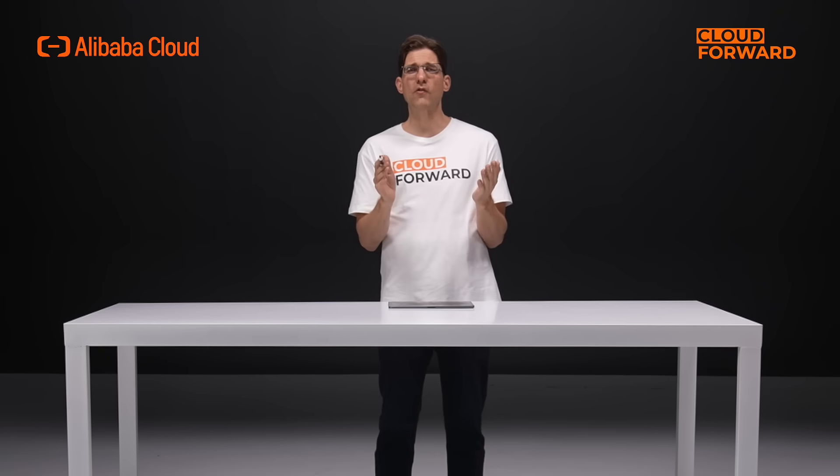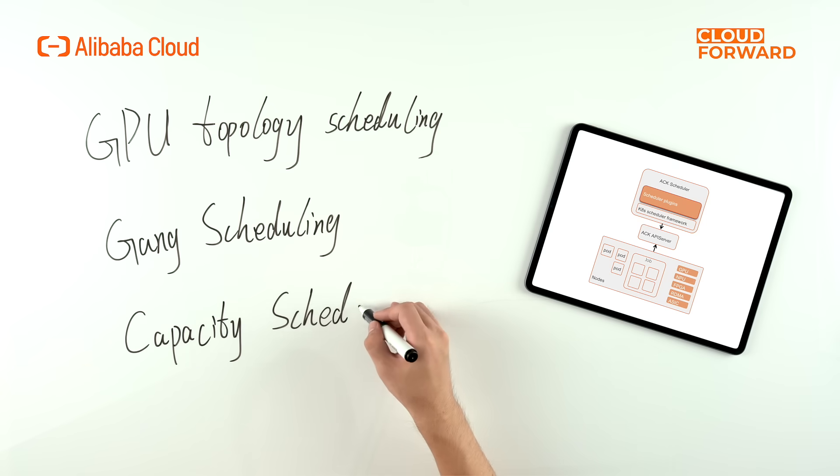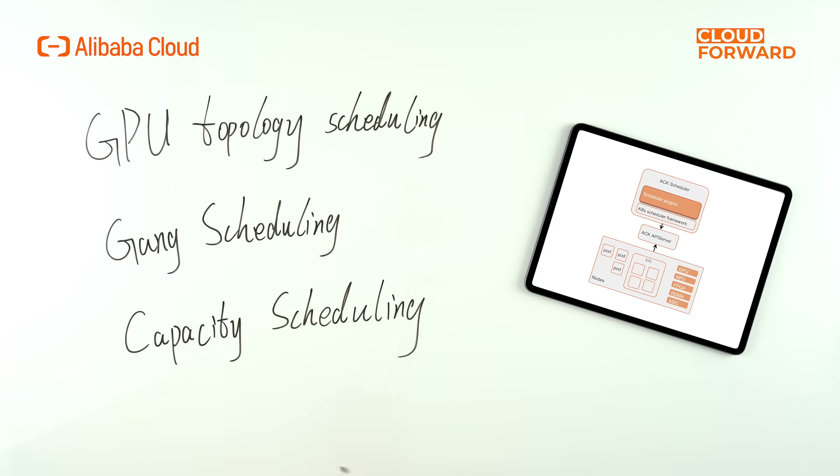To improve overall cluster resource utilization, typical policies such as gang scheduling, capacity scheduling, and bin pack or spread are supported for batch task scheduling scenarios such as distributed AI training and data intelligence. New features like priority task queues are also included to support custom task priority management and tenant elastic resource quotas.